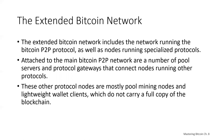These edge routers allow other services like exchanges, wallets, and merchant payment processing to be built on top of them. The extended Bitcoin network includes a network running the Bitcoin P2P protocol as well as nodes running specialized protocols like mining pool protocols. Attached to the main Bitcoin P2P network are pool servers and protocol gateways that connect nodes running other protocols to the Bitcoin protocol — mostly mining nodes or wallet clients which don't carry a full copy of the blockchain.